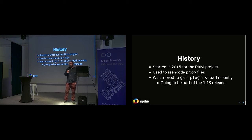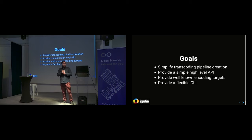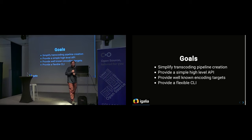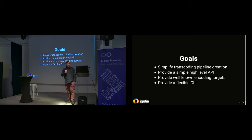This is going to be released as part of the 1.18 release, most probably in the next six months. The goal of the project is to simplify transcoding pipeline creation so you don't have to build your own pipeline for transcoding. It reuses components that already existed for encoding only — encode bin — and proposes an API to describe media formats for the transcoding target. The goal is also to have a list of well-known encoding targets, which is part of GST Encode Bin.